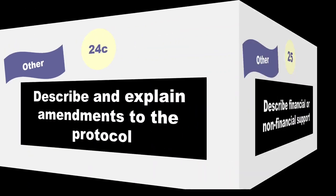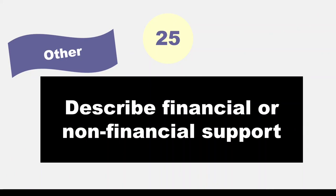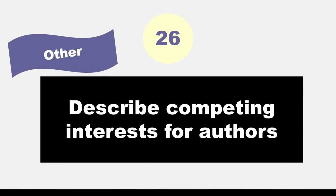Item 25 asks authors to describe sources of financial or non-financial support for the review, and the role of the funders or sponsors in the review. Item 26 asks authors to declare any competing interests or conflicts of interest.